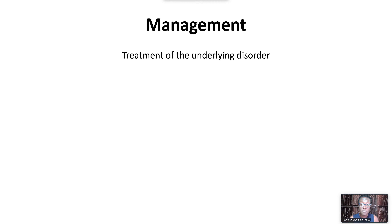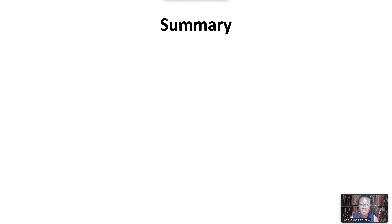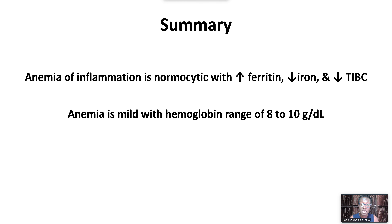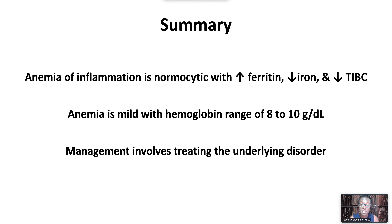Management involves treatment of the underlying disorder. In summary, anemia of inflammation is normocytic, with increased ferritin, decreased iron, and decreased total iron binding capacity. The anemia is typically mild, with a hemoglobin range of 8 to 10 grams per deciliter. Management involves treating the underlying disorder.